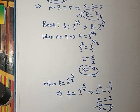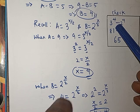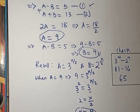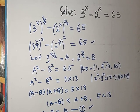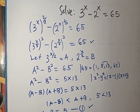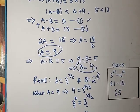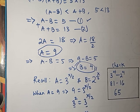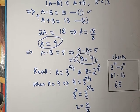To do the final check, we go back to the original equation: 3^x minus 2^x equals 65. Plugging in x equals 4: 3^4 minus 2^4 equals 81 minus 16 equals 65. This confirms the solution is correct. Therefore x equals 4. Thank you so much for watching.